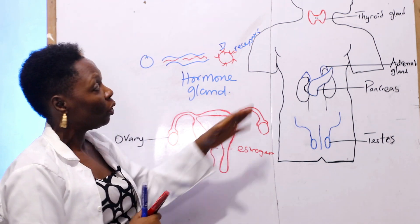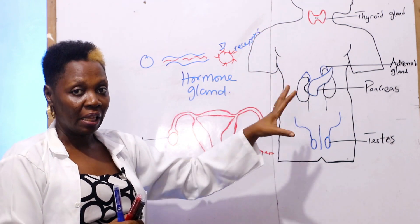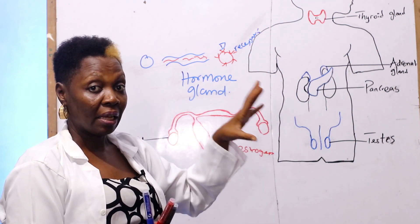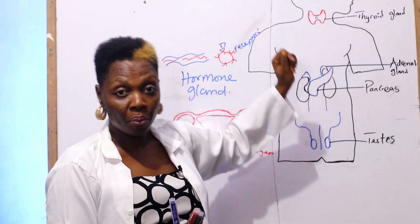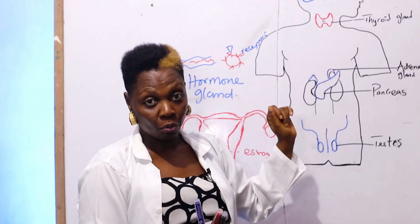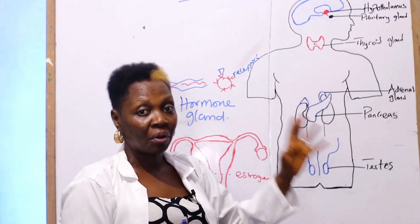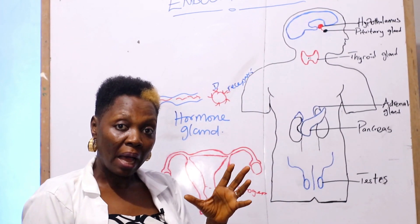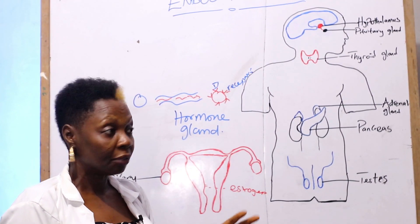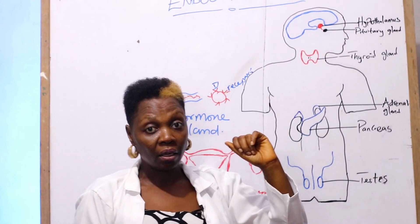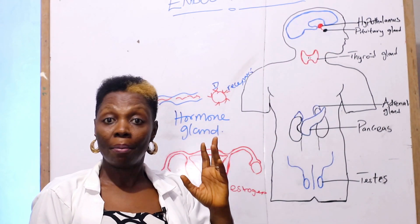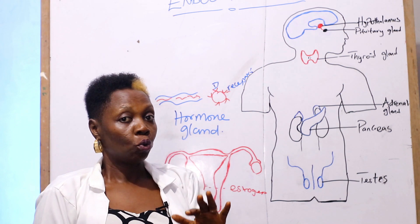Now, we are going to be looking at the major glands in the body that secrete and synthesize hormones. From the brain, we have the hypothalamus, which secretes signals and sends them to the pituitary gland. The pituitary gland, also situated in the brain, is also called the master gland, made up of two lobes: the anterior and the posterior lobe.